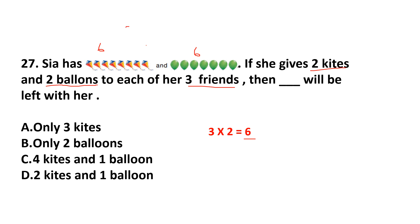She has 7 balloons total, and she gives away 6 balloons (2 to each of 3 friends), so 7 minus 6 = 1 balloon remains. She is left with 2 kites and 1 balloon. The answer is option D.